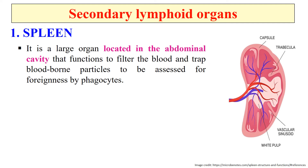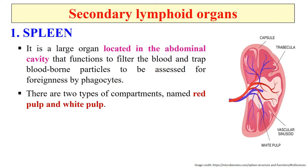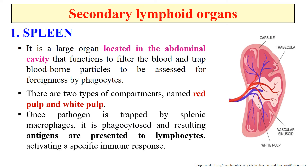The secondary lymphoid organs include, first, the spleen. The spleen is the most highly organized secondary lymphoid organ. It is a large organ located in the abdominal cavity that functions to filter the blood and trap blood-borne particles to assess for foreignness by phagocytes. The spleen is surrounded by a capsule and has two types of compartments: red pulp and white pulp. The red pulp consists of a network of sinusoids containing macrophages and erythrocytes. Once a pathogen is trapped in splenic macrophages or dendritic cells, it is phagocytosed, killed, and digested, and the resulting antigen is presented to lymphocytes to activate a specific immune response.